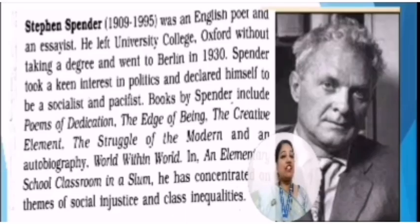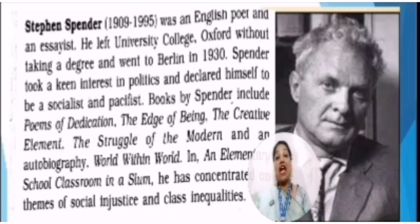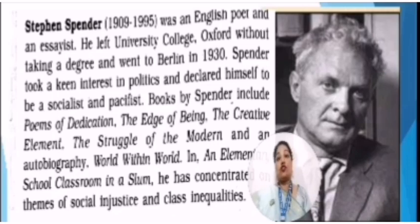Poet Stephen Spender was an English poet and an essayist. He was a college dropout as he left University College Oxford without taking a degree and went to Berlin in 1930. He was having interest in politics also, and he was a socialist and pacifist.